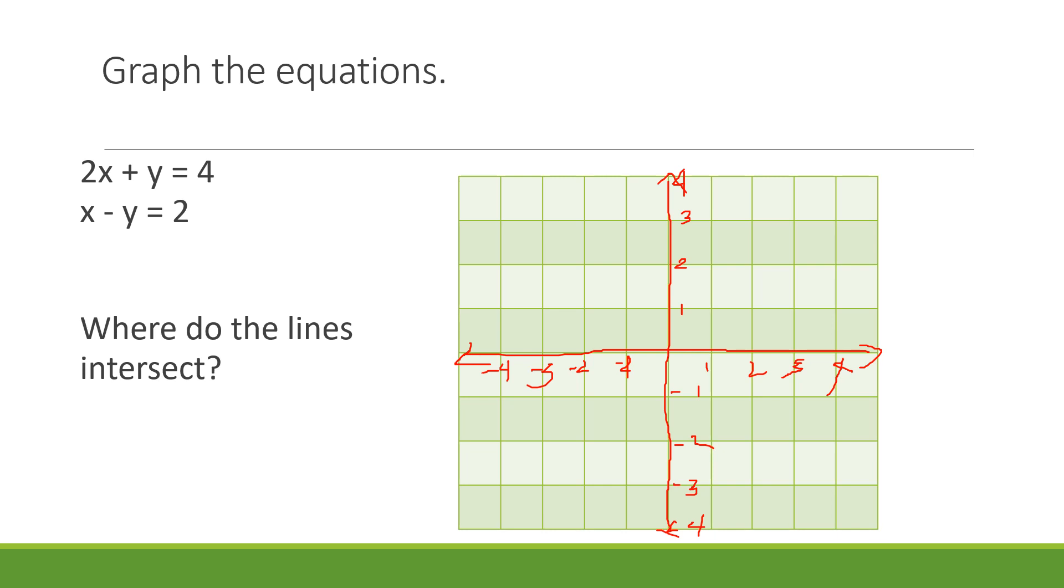From our solution in the previous one, we have a different color to distinguish. For the first equation, we have (0, 4). That means 4 is here, so we have a point here. Then we have (2, 0). We can connect these two dots or two points here to form a line. This is our graph for 2x plus y equals 4.